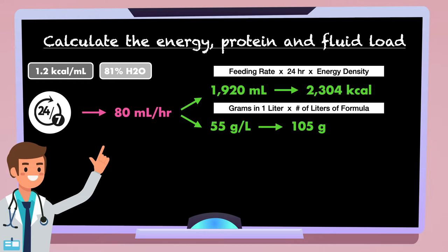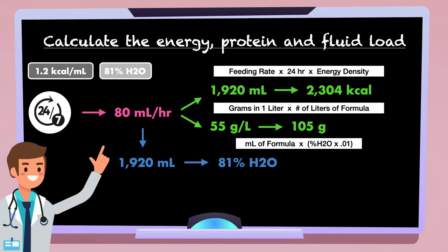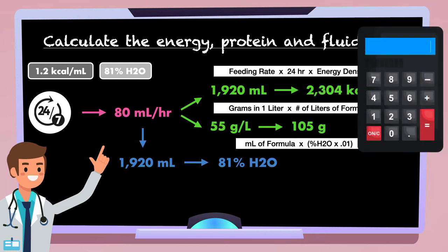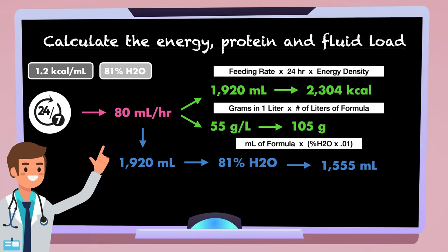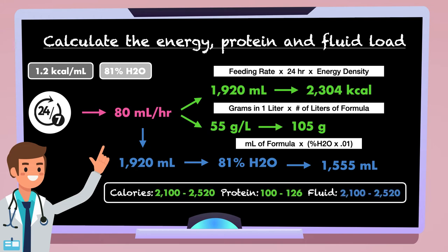Finally, since the formula is 81% water, we can obtain the volume of water delivered by multiplying the total volume of formula by %H2O times 0.01. Within the parentheses, you move the decimal place of the percentage two places to the left to get 0.81, then multiply it by 1920, and the result is 1555 milliliters of water. The last thing we'll do in this step is compare these values to our estimated nutritional needs, and we can see that calories and protein are satisfied, but we are short on fluid.